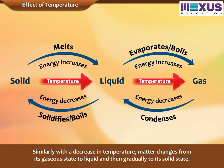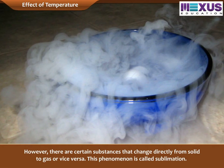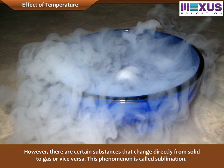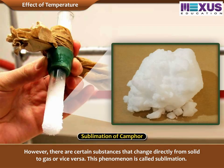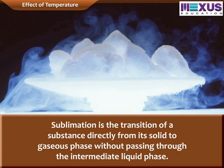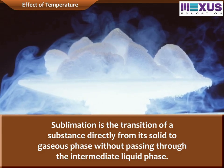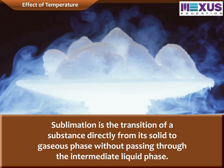Similarly, with a decrease in temperature, matter changes from its gaseous state to liquid and then gradually to its solid state. However, there are certain substances that change directly from solid to gas or vice versa — this phenomenon is called sublimation. For example, camphor. Sublimation is the transition of a substance directly from its solid to gaseous phase without passing through the intermediate liquid phase.